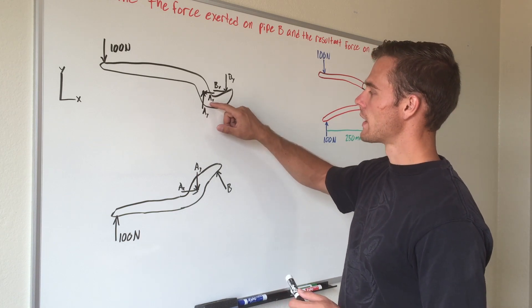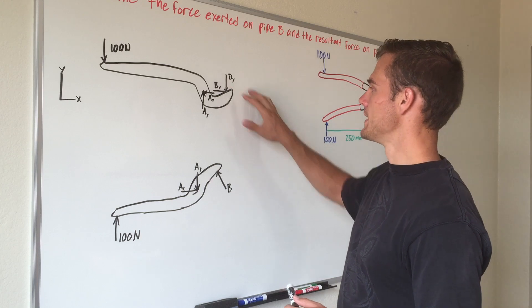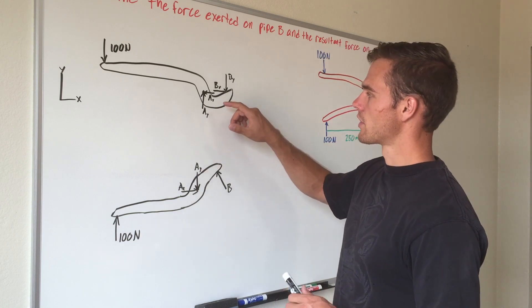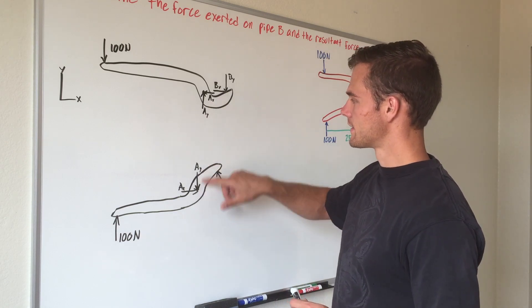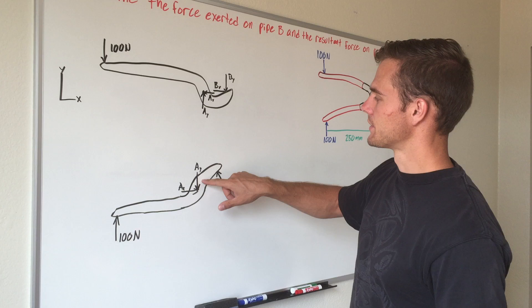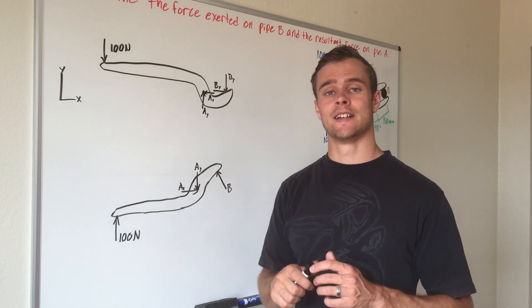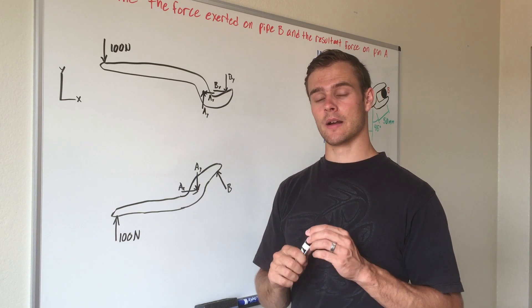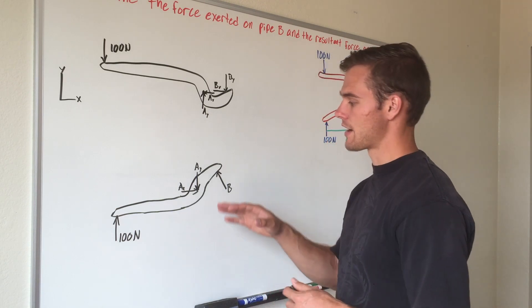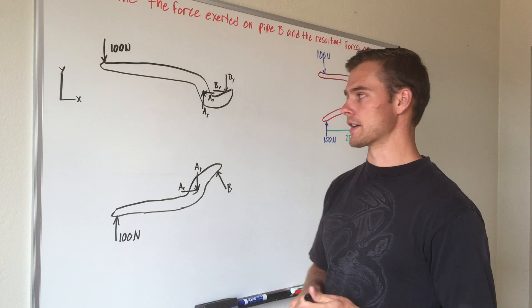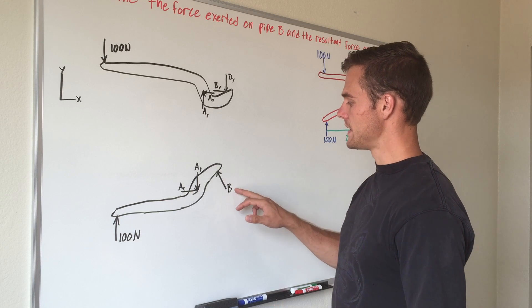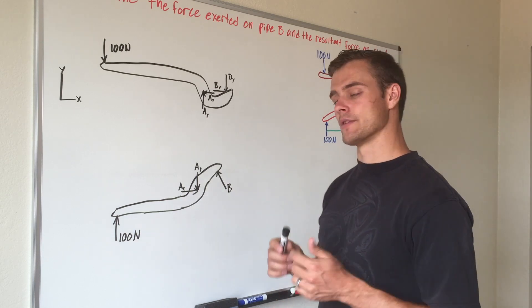And the reaction force at B on that pipe also into its x and y components. And so you'll notice that we have drawn our y components in opposite directions and our x components in opposite directions where these two members connect at this pin. And that's important when you're drawing the free body diagrams of members that share forces, which would be the reaction forces where they're connected. So you draw them with equal magnitude and opposite direction. And you'll notice here on this free body diagram I have drawn force B not split up into its components, and we'll see why here in a minute.